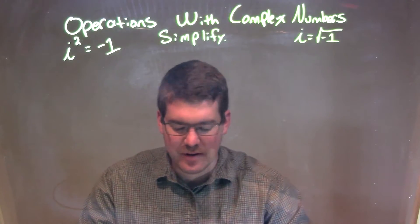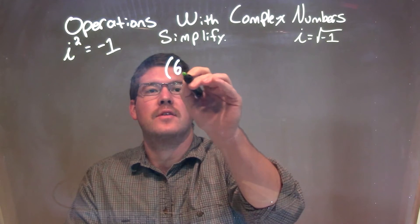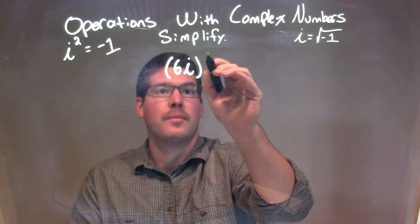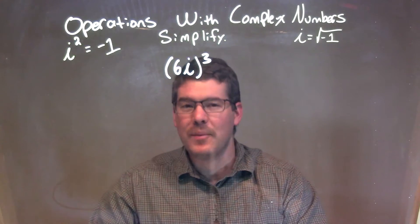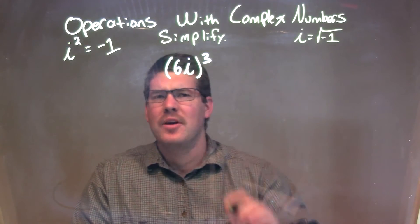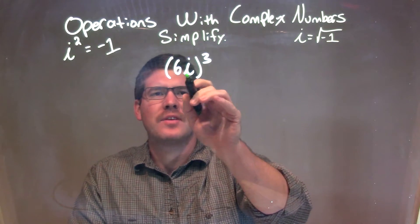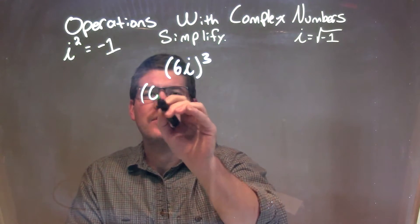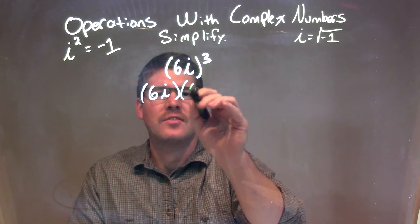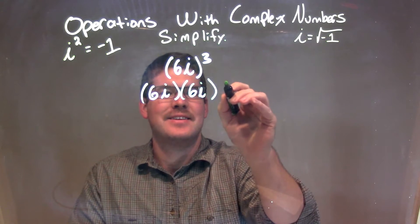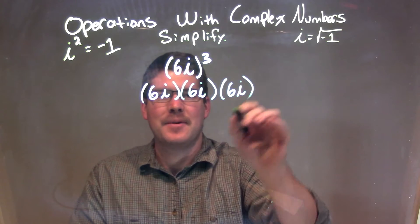If I was given this complex number, 6i to the third power, well, this one is a little tricky because we have 6i to the third power. That's really just 6i times 6i times 6i, right?